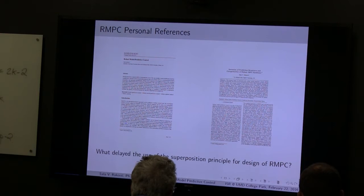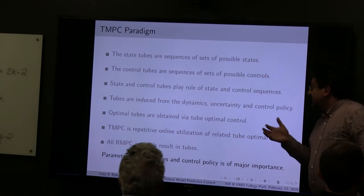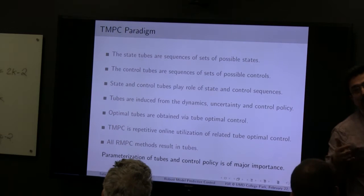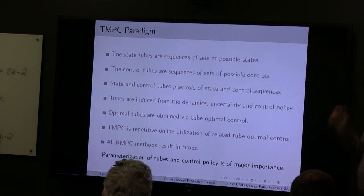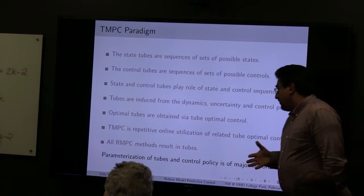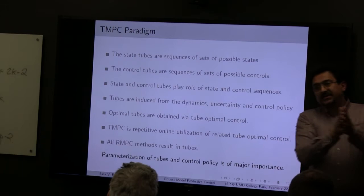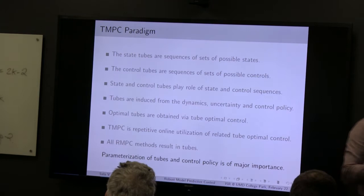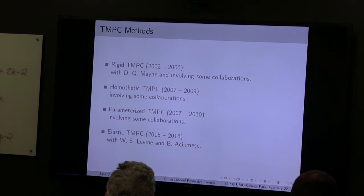I'll give a reason why this may have happened. To give you a flavor of tube model predictive control: state tubes are sequences of sets of possible states; control tubes are sequences of sets of possible controls. State and control tubes play the same role as state and control sequences in ordinary MPC. Tubes are induced from the underlying dynamics, uncertainty, and control policy. Optimal tubes are obtained through tube optimal control — it's set-valued analysis, a set-valued version of ordinary MPC. Once you fix the control policy, your predictions necessarily become set-valued, giving you state and control tubes.